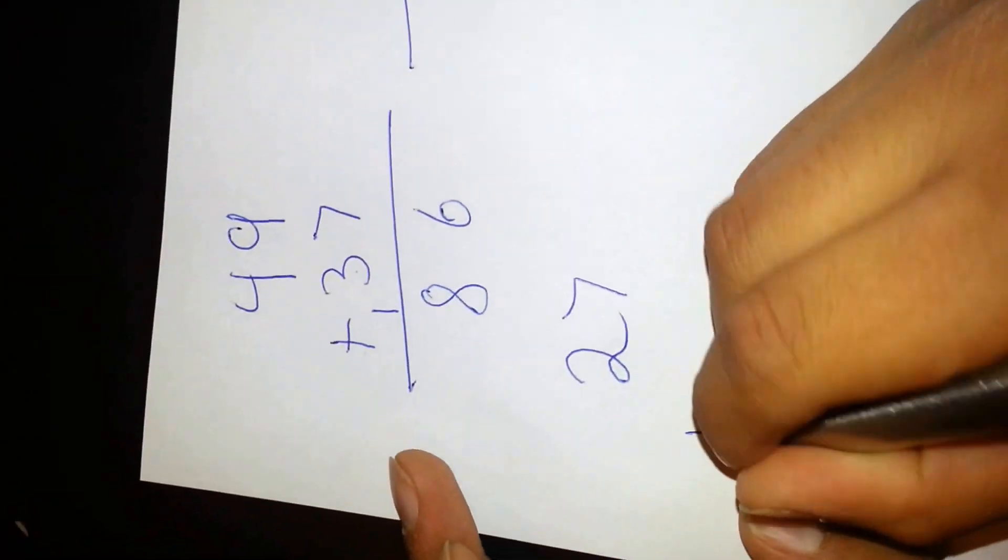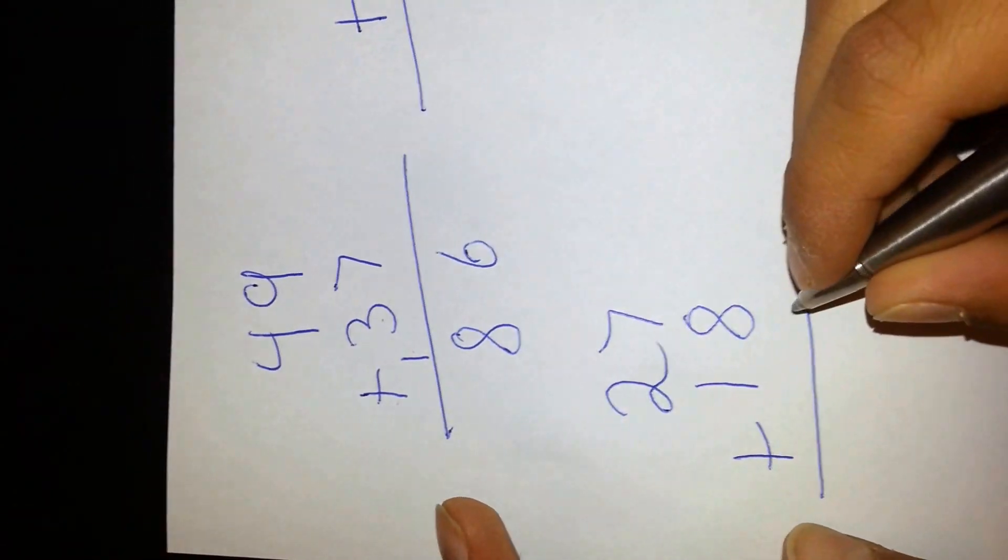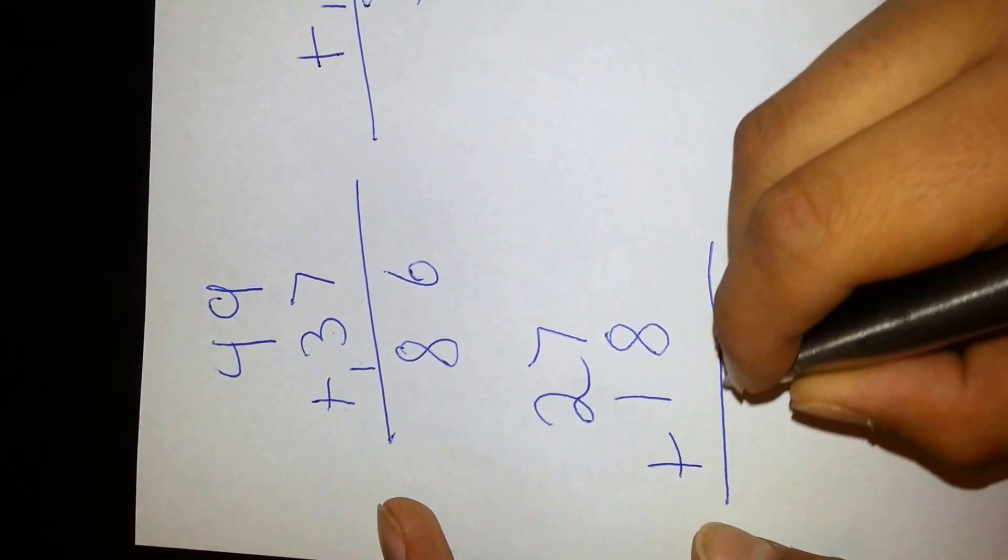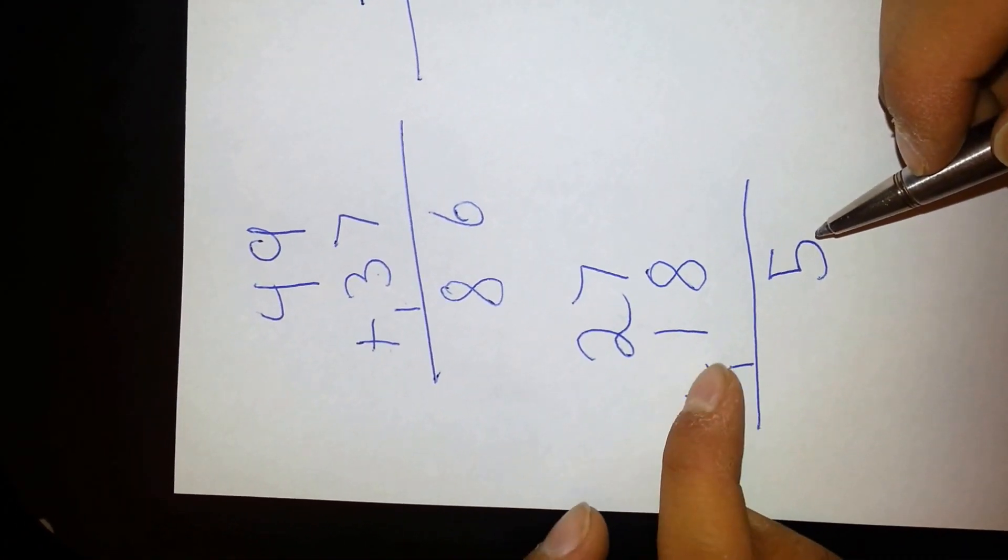Now try this one: 27 plus 18. 8 and 7 is 15, put down the 5, carry over the 1. 2 plus 1 plus 1 is 4. So the answer is 45.